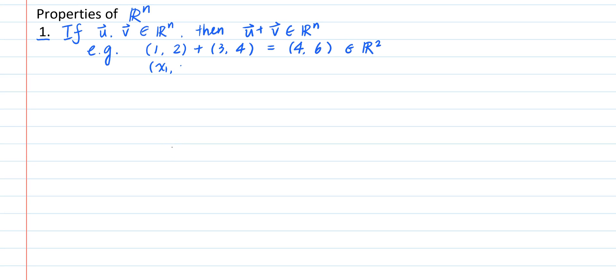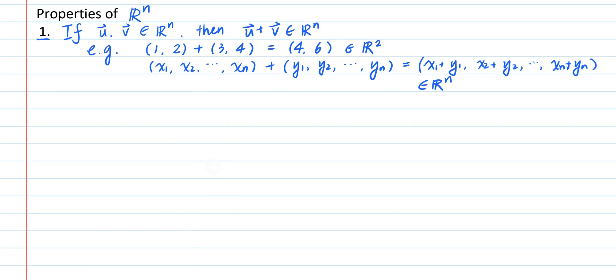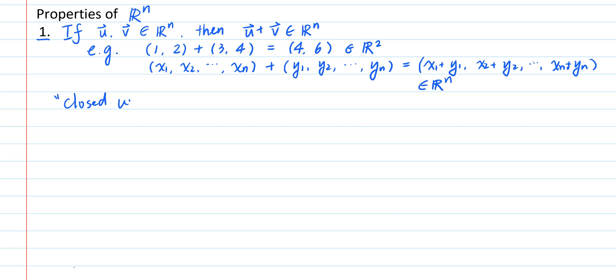You can verify that any sum of two n-tuples is still an element of R^n. This property is known as the closed under addition property.